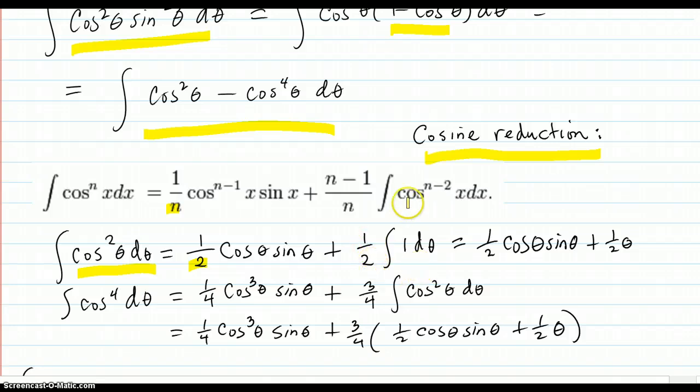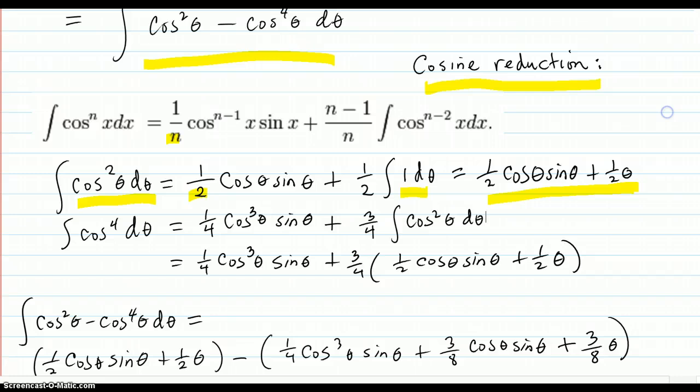So you put the 2 in there and that's how you get to half. And you work it down here. 1 half cosine to the 0 power, 2 minus 2 is 0, which is 1. And so that comes out 1 half theta. Integral of 1 is theta. So the cosine squared is here.